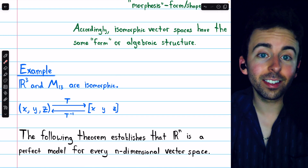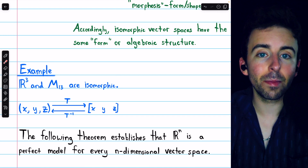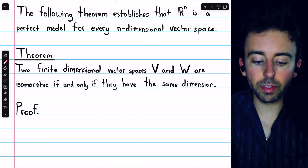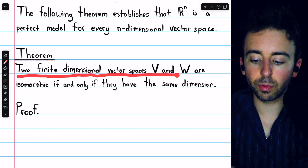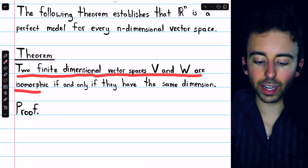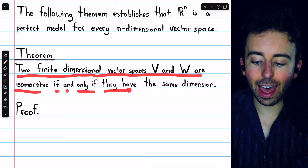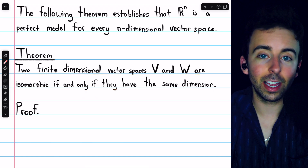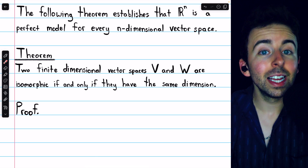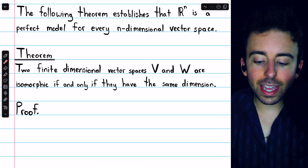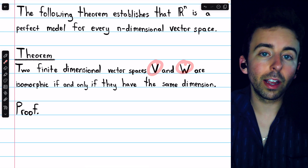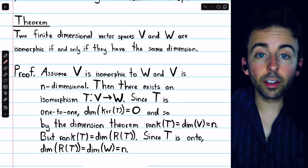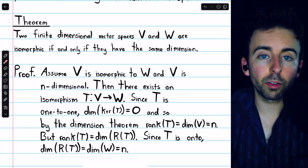The theorem states that if two finite-dimensional vector spaces have the same dimension, then they'll be isomorphic, and the converse is true as well. Two finite-dimensional vector spaces V and W are isomorphic if and only if they have the same dimension. So if some vector space has n dimensions, it would be isomorphic to Rn. Let's go ahead and prove it. We'll begin by assuming that V and W are isomorphic and show that forces them to have the same dimension. This proof relies on some prior results about rank and nullity of linear transformations.